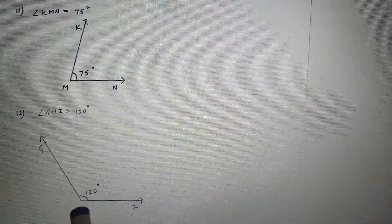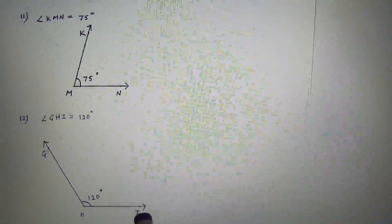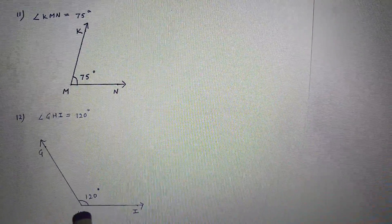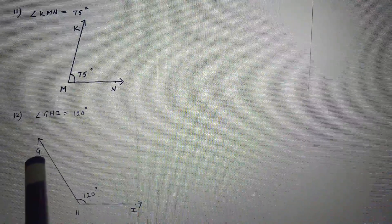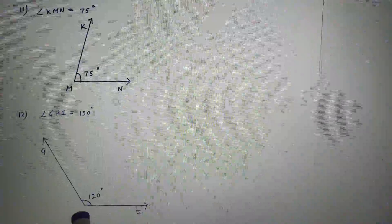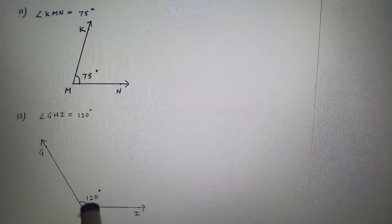Here the vertex is H. So draw ray HI, keep the protractor on point H, mark the 120 degree point, join points H and G and you will get angle GHI equal to 120 degrees.